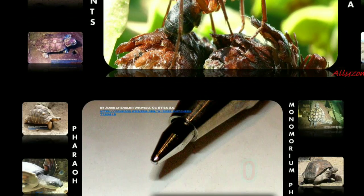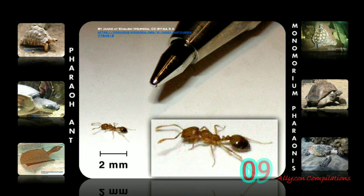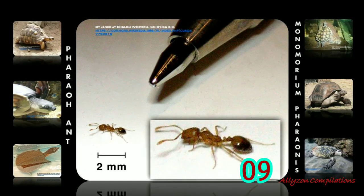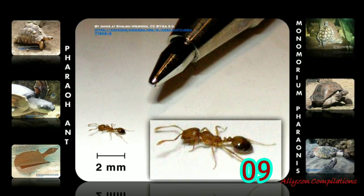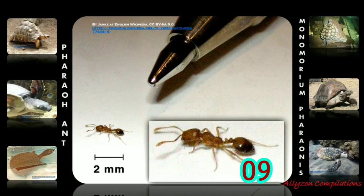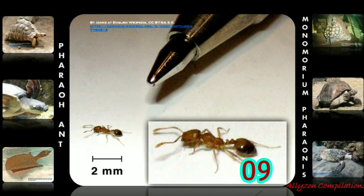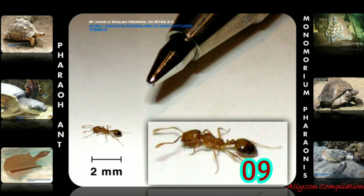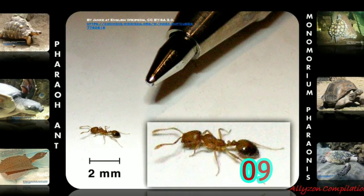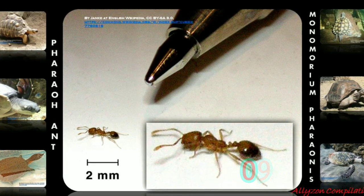The pharaoh ant is a small yellow or light brown, almost transparent ant notorious for being a major indoor nuisance pest, especially in hospitals. The pharaoh ant, whose origins are unknown, has now been introduced to virtually every area of the world, including Europe, the Americas, Australasia, and Southeast Asia.